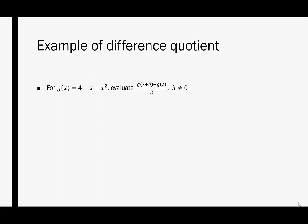In our next example, we're given a quadratic function, and we want to find the difference quotient — this time of g of 2 plus h minus g of 2, over h. I'm going to start by figuring out what g of 2 plus h is equivalent to. That means anywhere in the function I see an x, I'm replacing it with 2 plus h, giving 4 minus 2 plus h minus 2 plus h quantity squared.